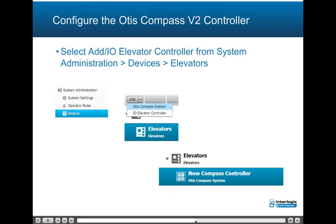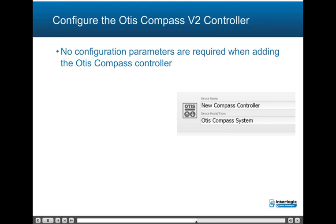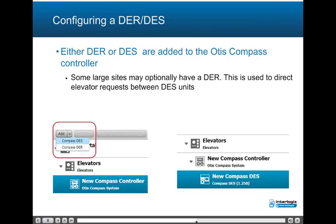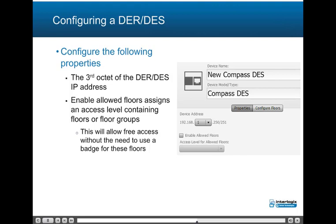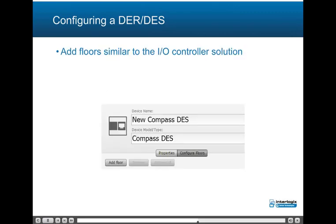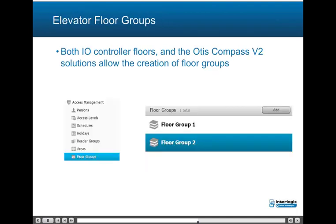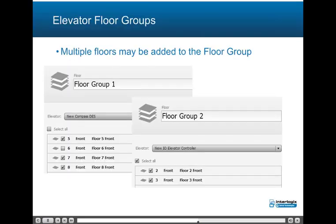To configure the Otis Compass V2 controller, from System Administration select Devices, then Elevators, then add an I.O. Elevator controller. No additional configuration parameters are required when adding the Otis Compass controller. Next, either a DER or DES is added to the Otis Compass controller. The following properties will need to be configured: the third octet of the DER/DES IP address; optionally enable allowed floors — this configuration assigns an access level containing floors or floor groups to allow free access to specific floors during specific times without the need to use a badge (sometimes referred to as day mode). Multiple floors may be added to the floor group. Either individual floors or floor groups may be assigned to the access level, which is then assigned to a badge.